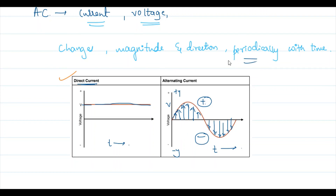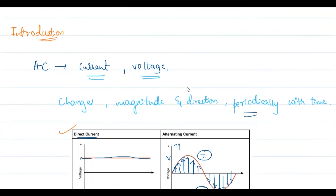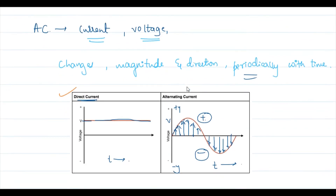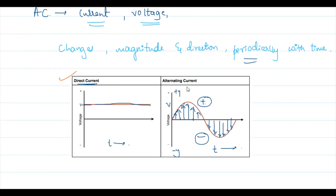We will see the important terms regarding alternating current: what do you mean by period, frequency, phase, amplitude, and everything. We will see the remaining part in the next class. Thank you.